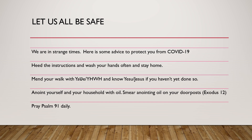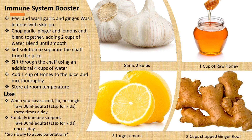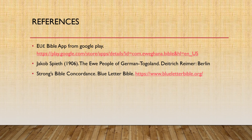Anoint yourself and your household with oil — olive oil. Even smear some anointing oil on your doorpost. Read Exodus 12. Pray with Psalm 91 daily. This is my mother's recipe to boost your immune system. Here are the references which I use for today's lesson. If you are interested in reading an Ewe Bible, the link is posted on the reference page. Thank you very much and God bless you. Maunairau.